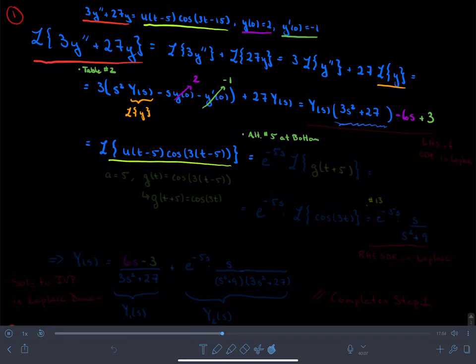And so to perform that transform, what I need to do is I need to figure out my a. My a can be found right here. And so my a is equal to 5.